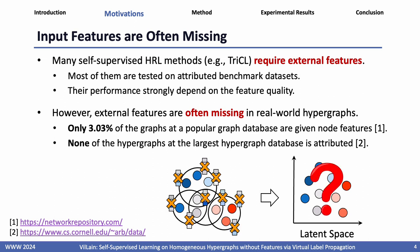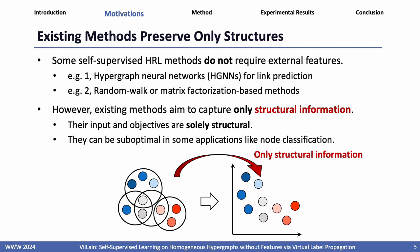However, external features are often missing in real-world hypergraphs. For example, none of the hypergraphs in the largest hypergraph database is attributed. While some self-supervised HRL methods do not require external features, these methods only preserve structural properties since their input and objectives are solely structural, so they can be suboptimal in some applications like node classification.